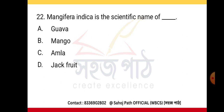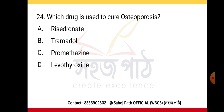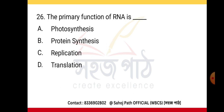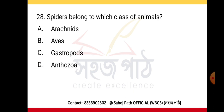Mangifera indica is the scientific name of mango. Proteins are made up of amino acids. Which drug is used to cure osteoporosis? A pinnately compound leaf is one where the leaflets are arranged along the middle vein. A palmately compound leaf is another type. The primary function of RNA is protein synthesis. Lungs are the primary organs of respiration.